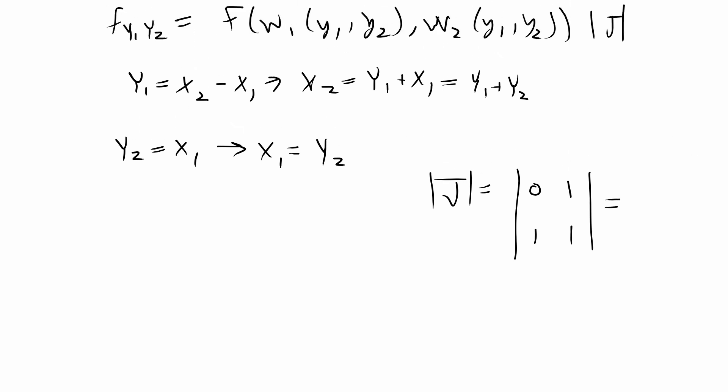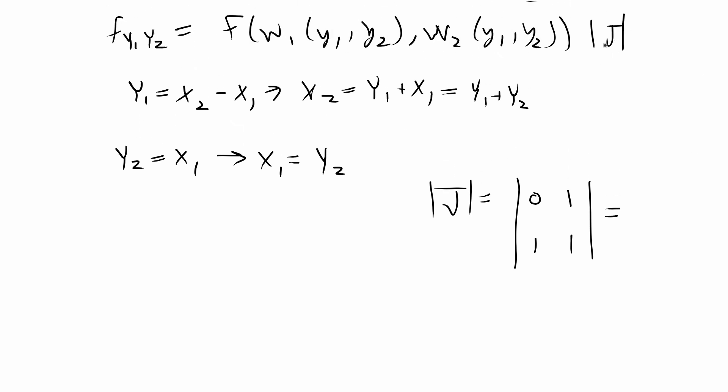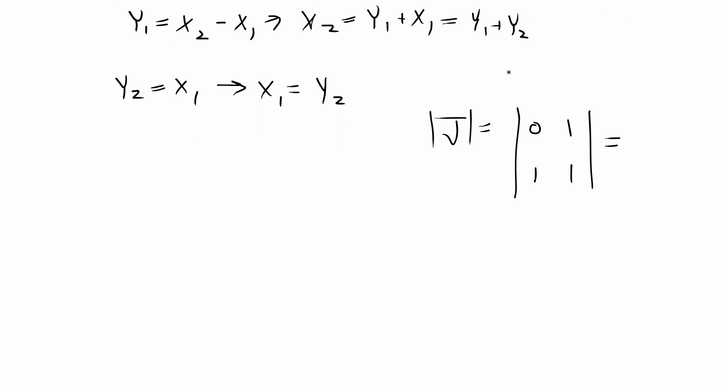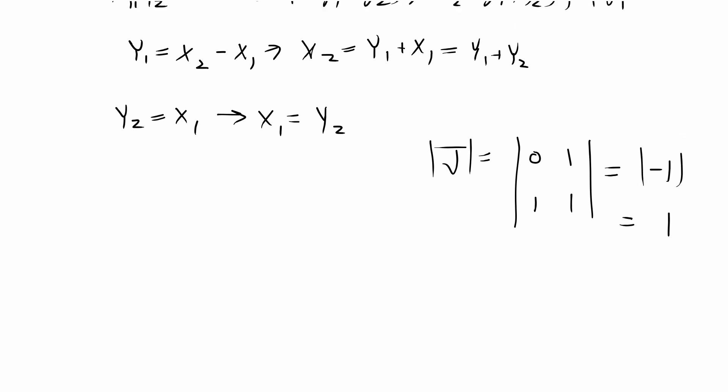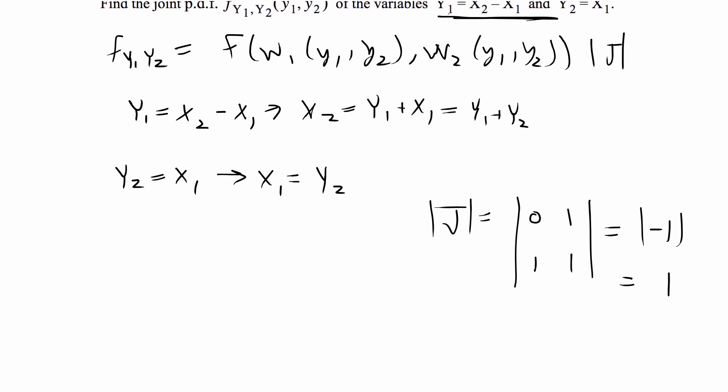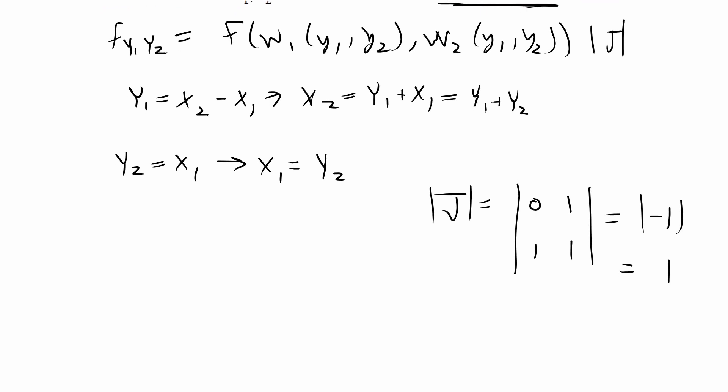The formula requires the absolute value of the Jacobian. The Jacobian is the determinant of this matrix, so that's 0 - 1. The absolute value of -1 is 1. In this case, we have a very simple Jacobian that won't affect the final answer.